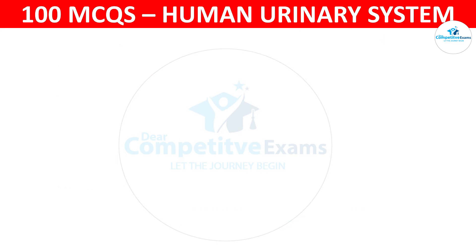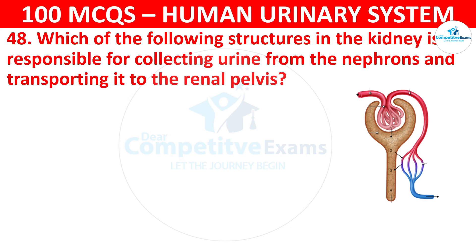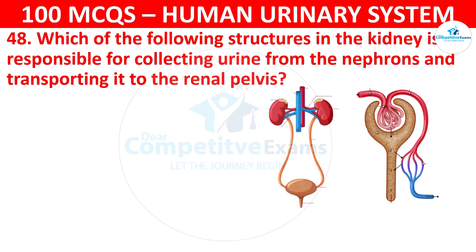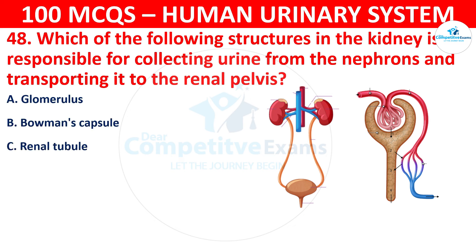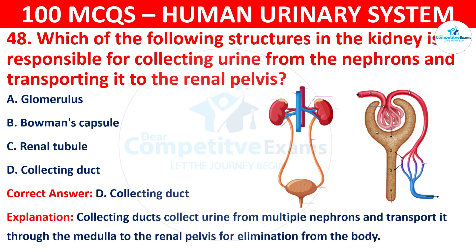Question 48: Which of the following structures in the kidney is responsible for collecting urine from the nephrons and transporting it to the renal pelvis? The options are: glomerulus, Bowman's capsule, renal tubule, or collecting duct. The correct answer is D, that is collecting duct. Collecting ducts collect urine from multiple nephrons and transport it through the medulla to the renal pelvis for elimination from the body.